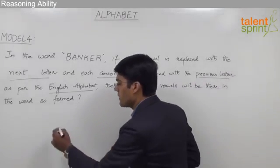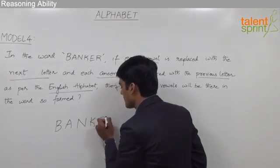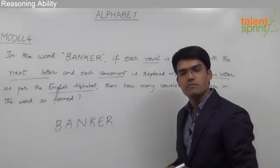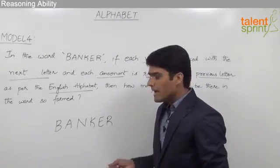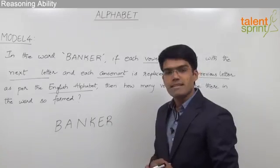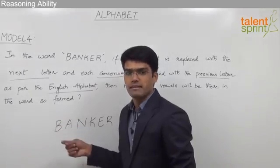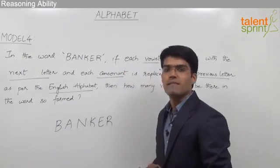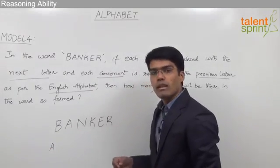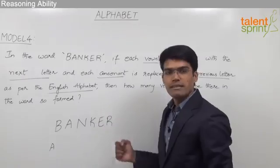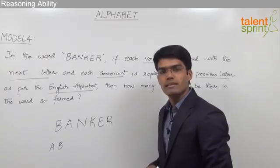Let us now solve this question. The given word is 'banker', which is a mixture of some consonants and vowels. Each consonant should be replaced with the previous letter and each vowel should be replaced with the next letter. B is a consonant, so it is replaced with the previous letter A. A is a vowel, so A gets replaced by B, as B is the next letter to A in the English alphabet.